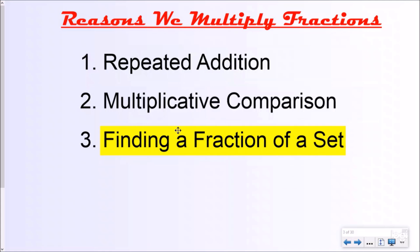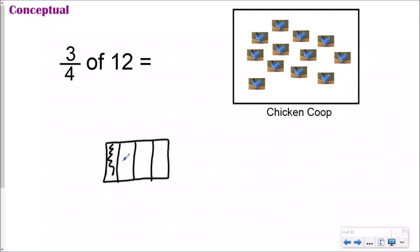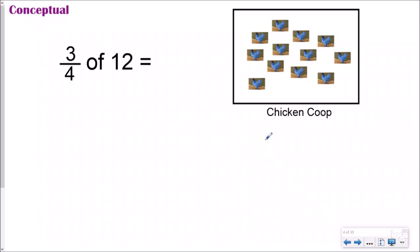Let's look at a conceptual example: three-fourths of twelve. We know fractions are equal parts — three-fourths of one whole, like one brownie, is that shaded portion. But when we talk about three-fourths of twelve, we're talking about three-fourths of a group. In this case, it's a group of blue chickens in a chicken coop — these chickens are making a chicken run, trying to escape. There are 12 blue chickens, and three-fourths of the 12 are going to escape. I'm going to use a tape diagram to understand what's happening.